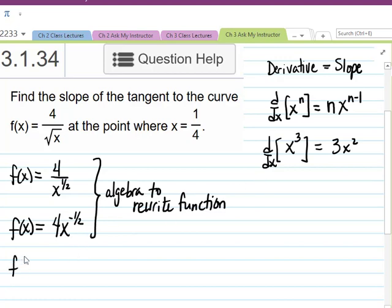So to find the derivative of this function, the coefficient will stay the same, the 4. Anytime you have a constant multiple, that just stays the same. Then we're going to take the derivative of x to the negative one-half by bringing the negative one-half power out front, and then subtracting 1 from it. So we're going to have 4 times negative one-half times x to the negative three-halves power.